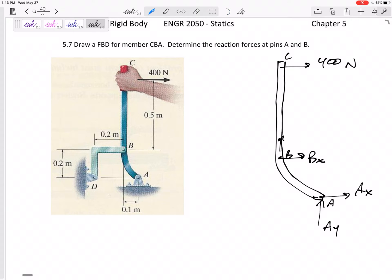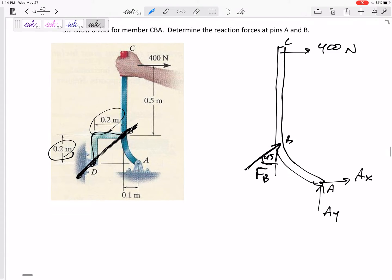But if I recognize that that link right there at BD is pinned and pinned and nothing in between, then I know the force at D, I know the force at B. They lie on this line right here. So instead of having a BX and a BY, I'm going to have an FB and it is at 45 degrees, it is at the angle, the direction of the pin and pin. That allows me now to only have one unknown and that free body diagram now only has three unknowns.